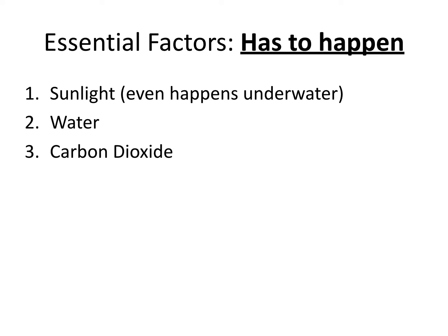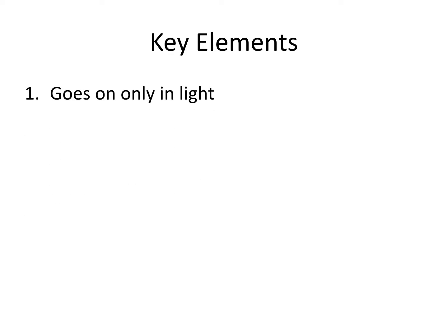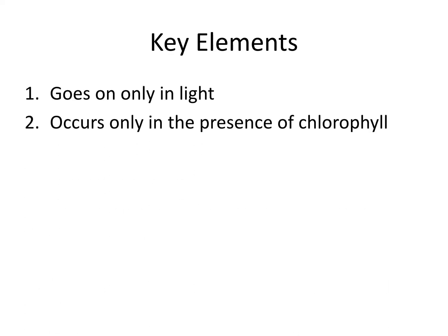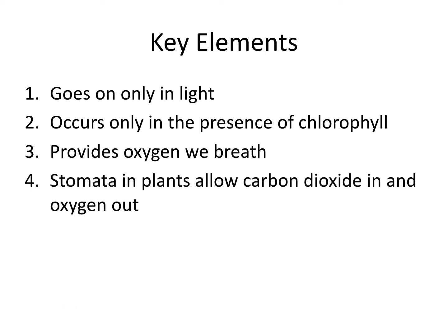You have three essential factors: sunlight — it even happens underwater — number two is water, which you get from your roots, and number three is carbon dioxide. Under essential factors, I have key elements — things that are important to keep in mind. It only goes on in the light. It occurs in the presence of chlorophyll, which is what makes plants green. It provides the oxygen we breathe. And the stomata in plants allow carbon dioxide in and oxygen out. I put the stomata part in there because stomata will come back again in transpiration.